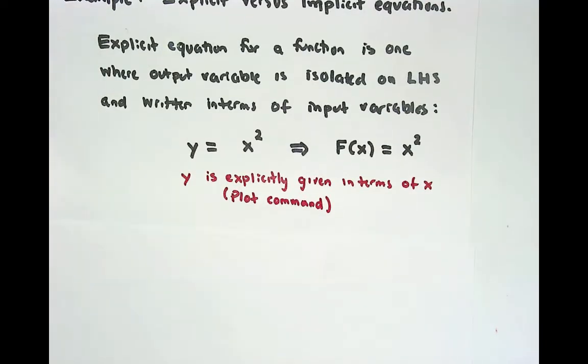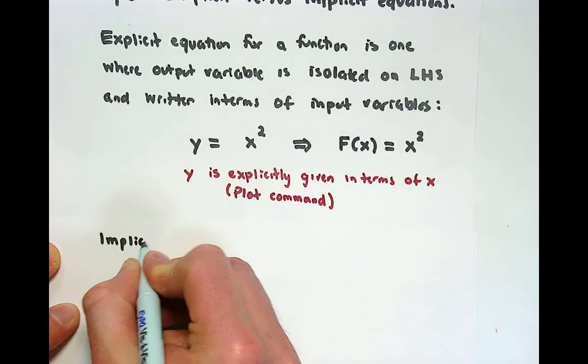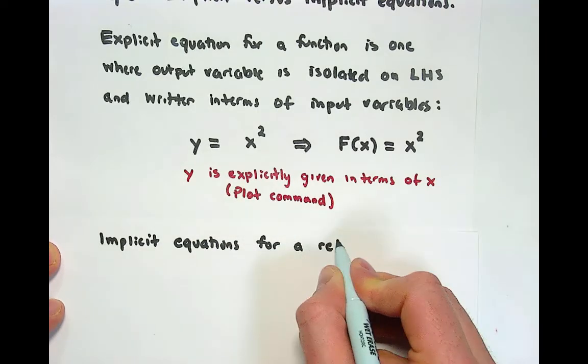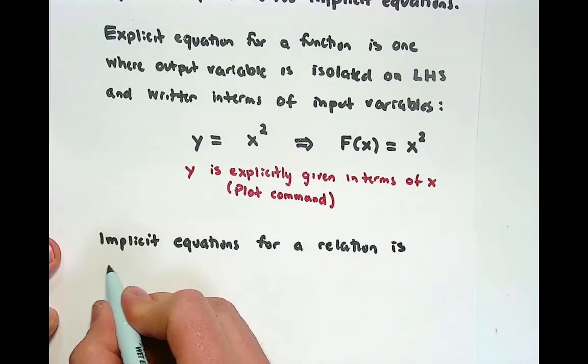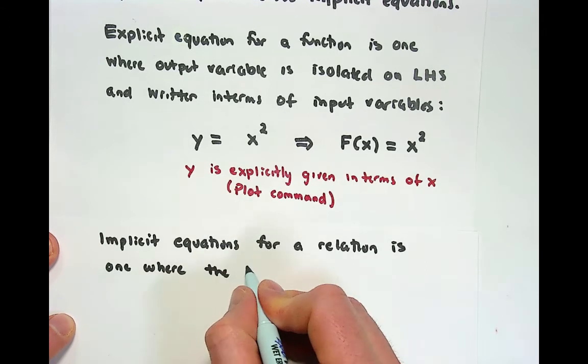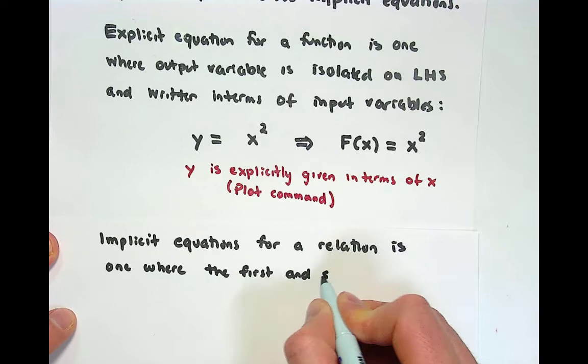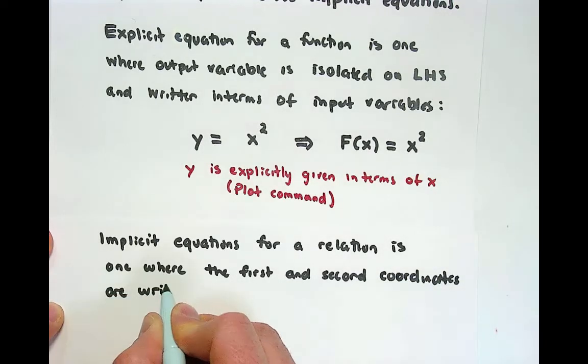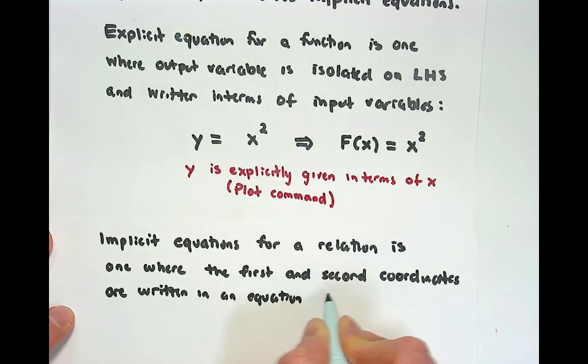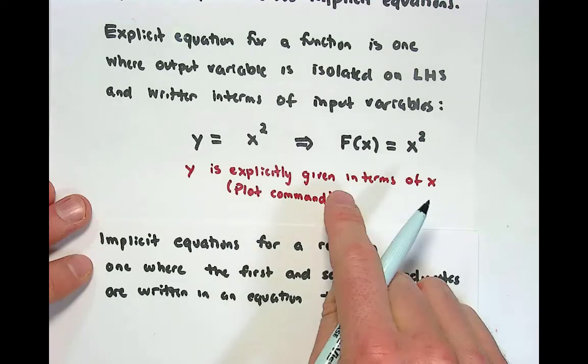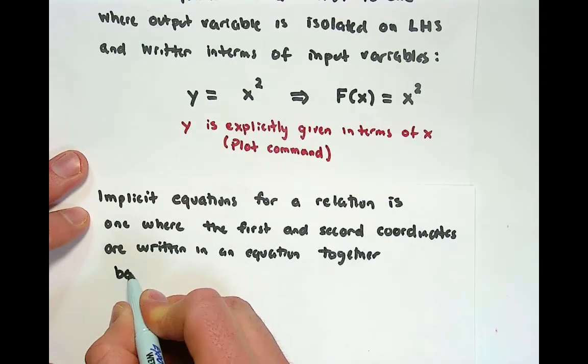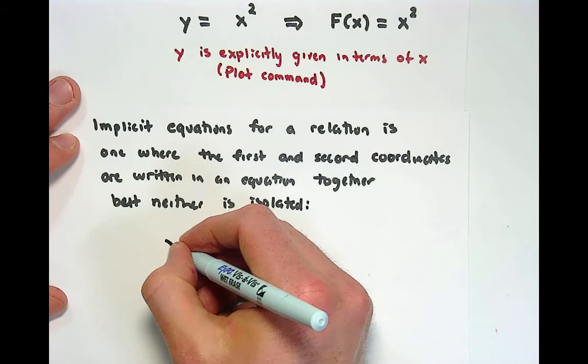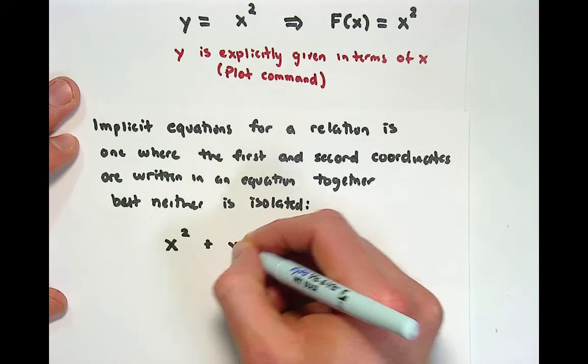On the other hand, an implicit equation is usually reserved for relations and not functions. And this is one where the first and second coordinates of ordered pairs are written in an equation together, but neither one is written as a function or in terms of another one isolated. And an example of this was the implicit equation for a circle of radius perhaps one.